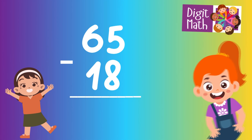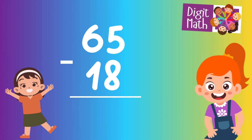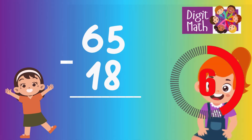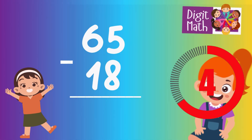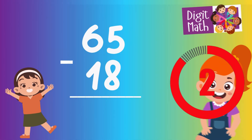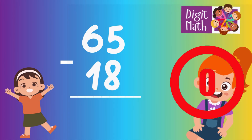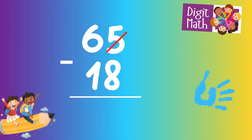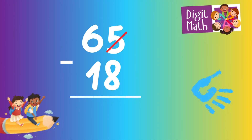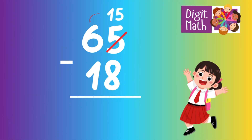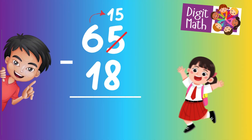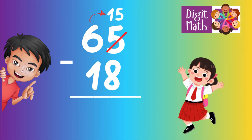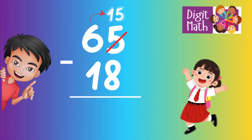65 minus 18 is... Time to think. In the Units column, we have 5 minus 8. Since it's not possible to subtract 8 from 5, we need to borrow from the Tens column. In the Tens column, we have 6. We take 1 from the Tens, leaving 5 in the Tens column and turning the Units column into 15.